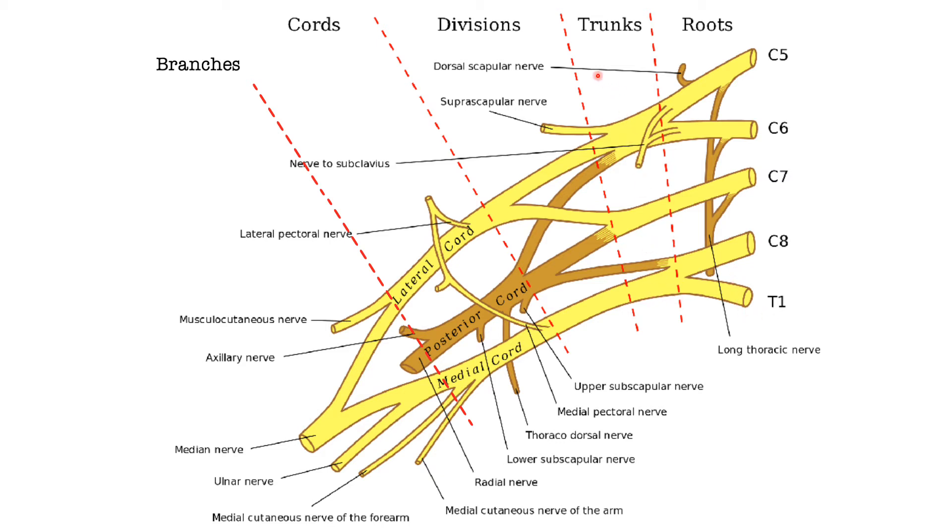Now each one of these trunks are going to be divided into two divisions. So we're gonna have the anterior and the posterior division. The anterior shown here in yellow while the posterior division is shown in brown.